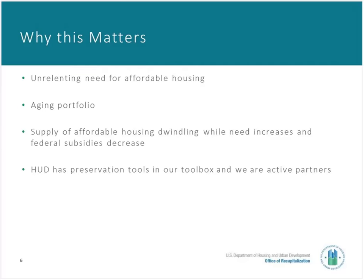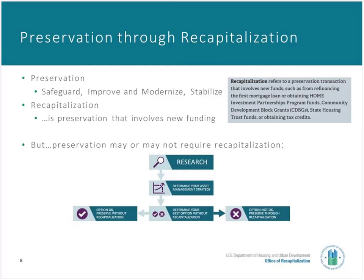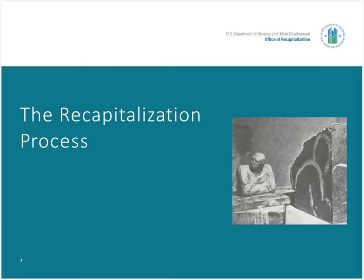This is Charlie Wilkins, glad to be with you today. The photo on the slide depicts two stages of making a sculpture. On the right you see the block of stone with rough outlines of what the sculptor intends; on the left, the finished product. Building a preservation transaction is similar to this. Most of what we'll talk about today is the process of making those rough outline strokes on the stone, and then there's a lot of work to get to the end product.